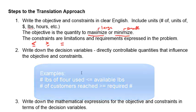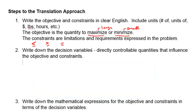The second step is to write down the decision variables. The decision variables are directly controllable quantities that influence the objective and the constraints. You want to ask, what quantities do the objective and the constraints depend on? Are they under our control? If not, what other quantities do these depend on?